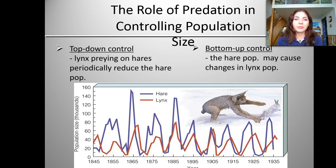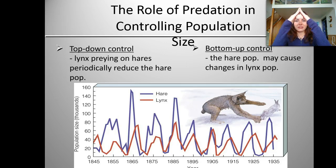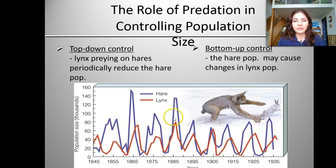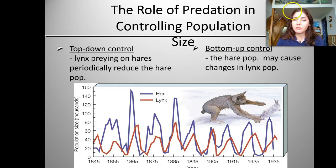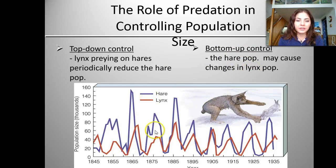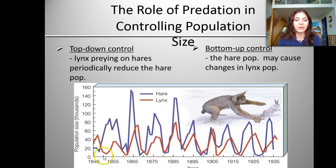So the role of predation in controlling population — there are two different types: top-down control and bottom-up control. At the top of the trophic pyramid are our top predators, so that is top-down control. For example, the lynx preying on hares periodically reduces the hare population — the top predator is controlling the population from the top down. Looking at this graph, the lynx is red and the hare is blue, and you can see an increase in hare population followed by an offset increase in the lynx population.